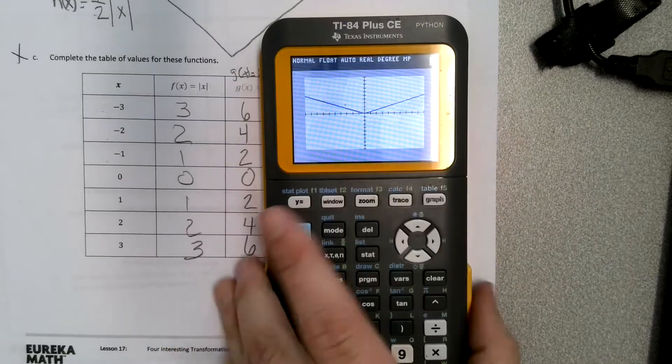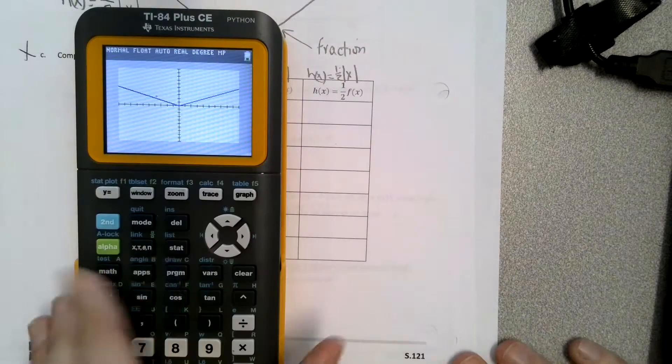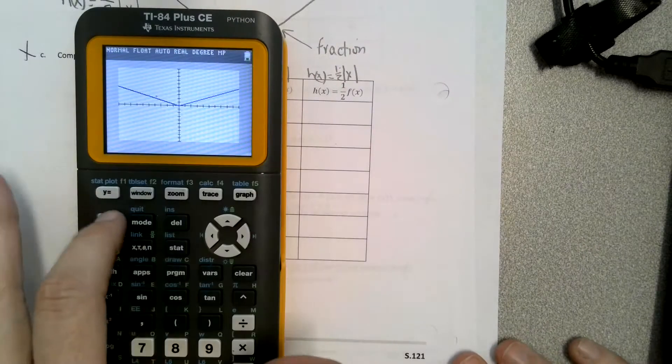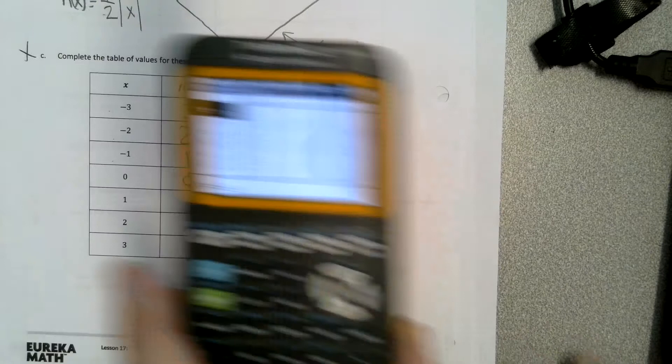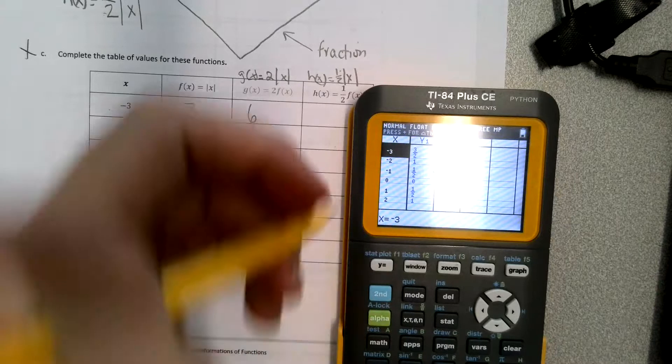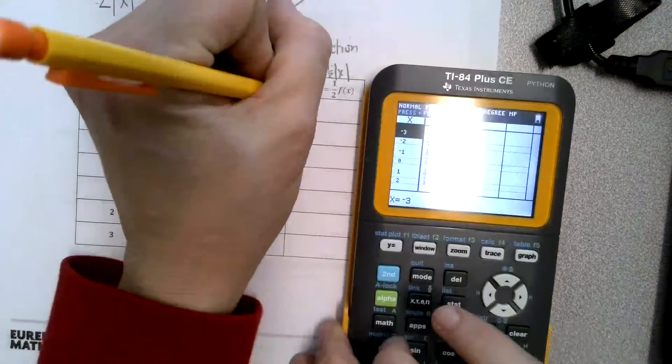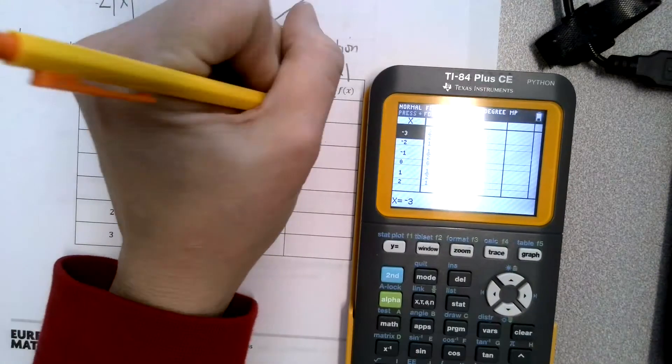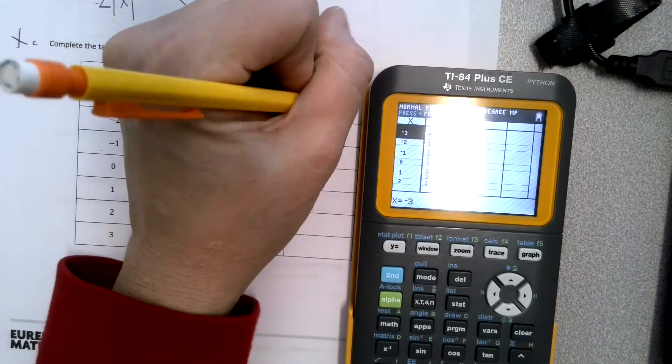And see how wide this one is? That's because it's a fraction. So then we go to second function table and we just start putting in our values. So our values are like 3 over 2, but you can also just put 1 and a half.